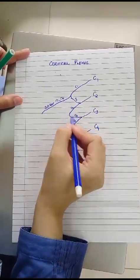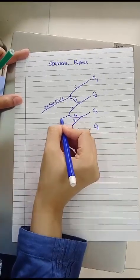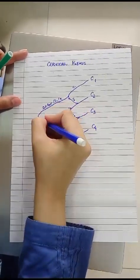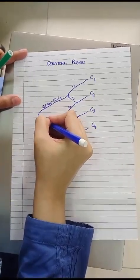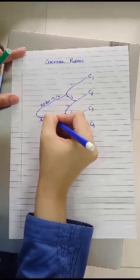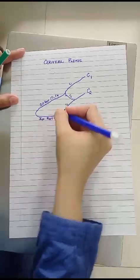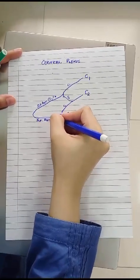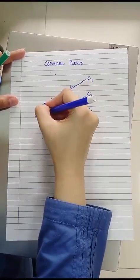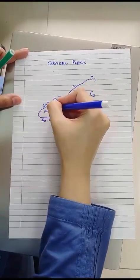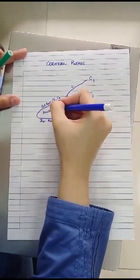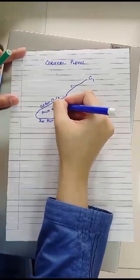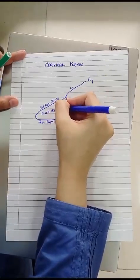The loop between C2 and C3 contributes in the formation of inferior root of ansa cervicalis. So this is ansa cervicalis, a secondary loop which is formed between C1, C2 and C3.